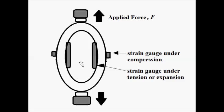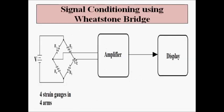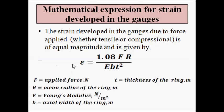The changes in strain cause a change in the resistance of the strain gauges, which is converted into a suitable voltage signal with the help of a Wheatstone bridge. The output voltage is amplified and fed to a display unit. The mathematical expression for both tensile and compressional strain is ε = 1.08·F·R/(E·b·t²), and they are equal in magnitude — which is the interesting feature of the proving ring type load cell.